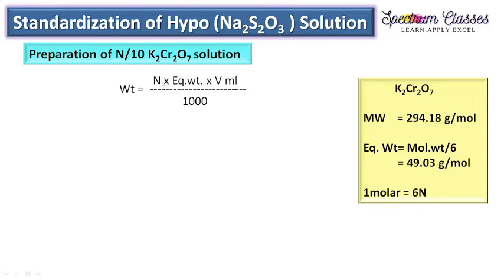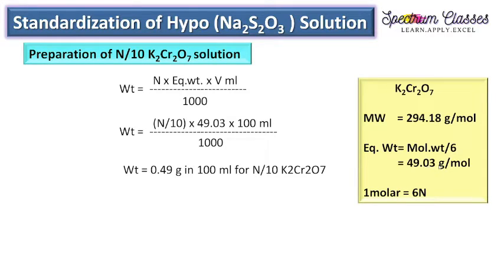The formula for normality is: weight = normality × equivalent weight × volume (in ml) ÷ 1000. Putting in the values for an N by 10 solution: weight = (1/10) × 49.03 × 100 ÷ 1000 = 0.49 grams of K2Cr2O7 to prepare an N by 10 solution in 100 ml. This is the calculation for students who want to prepare the K2Cr2O7 solution in normality.